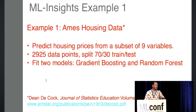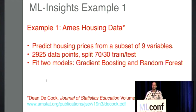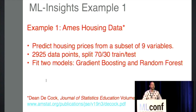My first example uses a simpler dataset: housing data. I pulled the Ames housing data — it's a relatively small dataset of about 2,900 data points. I split it 70/30 train and test and chose nine variables. I fit a boosting model and a random forest model — boosting did better than random forest. I didn't try to optimize these, so take the quality of the model with a grain of salt. This is really to illustrate the tools and how they might play a role in both model development and evaluation.